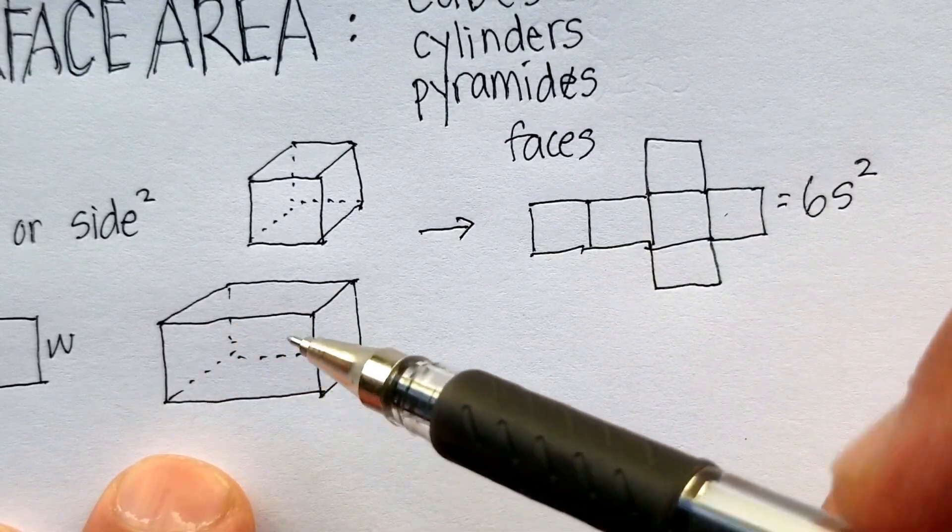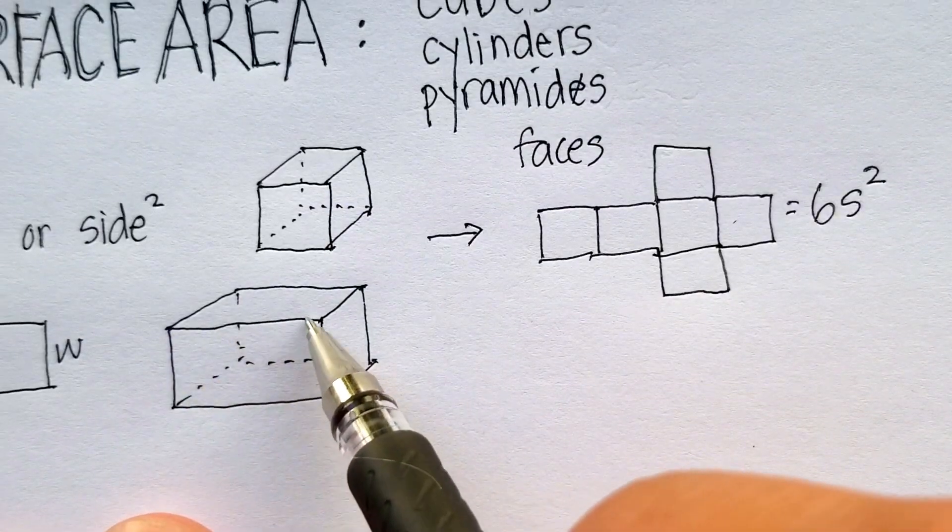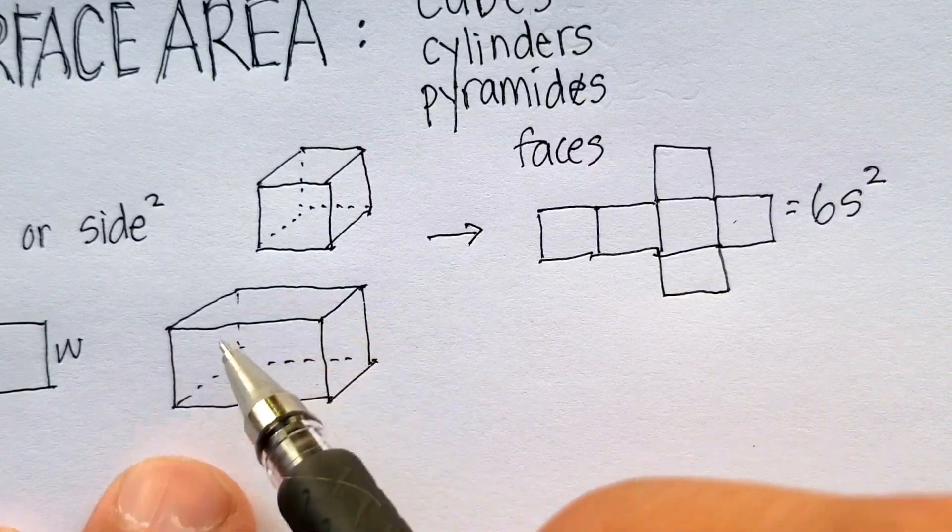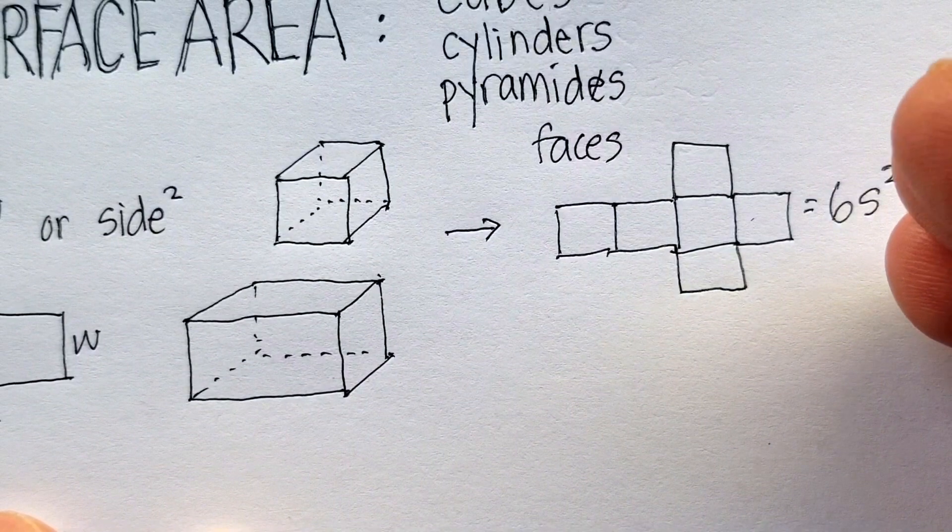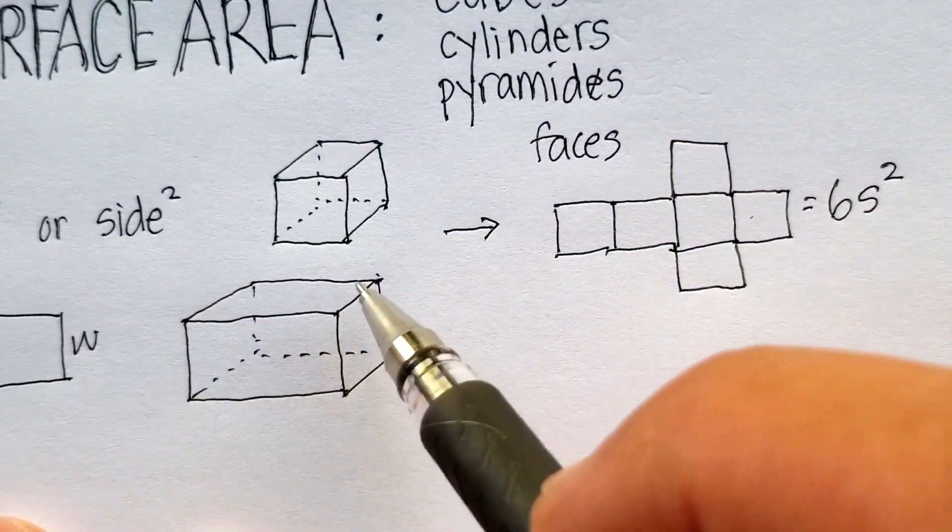the side that faces you is called a face. This is called an edge, where the two meet, and this is called a vertex. If I were to take this particular one apart,